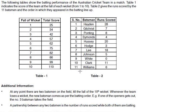The statement given was: the following table shows the batting performance of the Australian cricket team in a match. Table 1 indicates the score of the team at the fall of each wicket from 1 to 10. Table 2 gives the runs scored by the 11 batsmen in the order in which they appeared in the batting line.